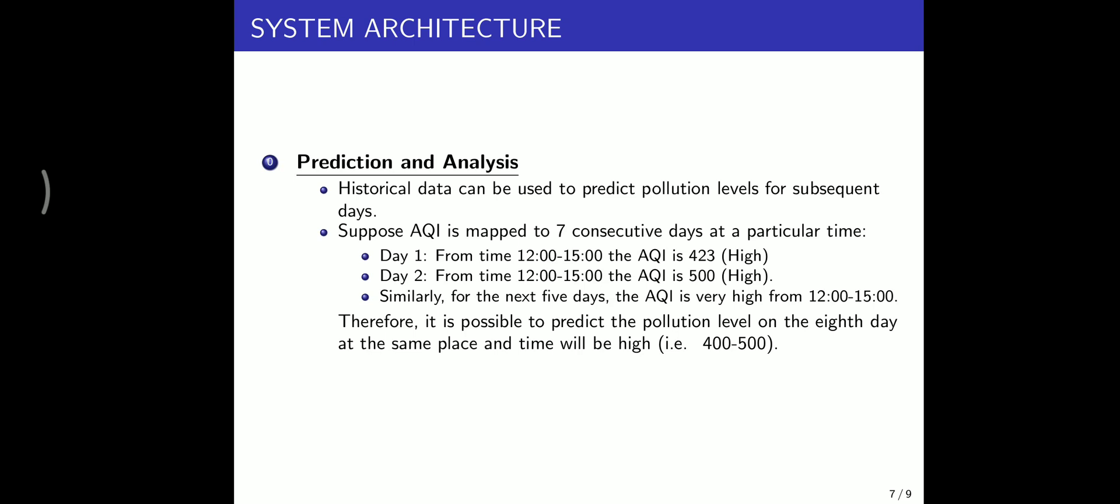Day 1 contains AQI level as 423, which we consider as high. Day 2 contains AQI level as 500. Similarly, for the next 5 days we have varying pollution levels in the dataset. With this algorithm, it is possible to predict the pollution level of the 8th day at the same place and time, which will be high, around 400 to 500.